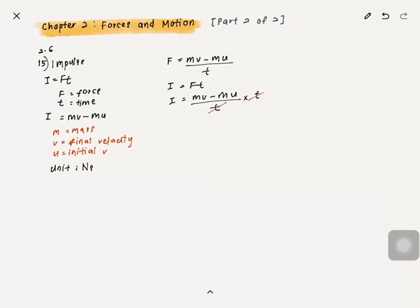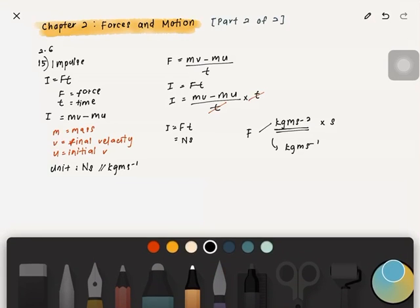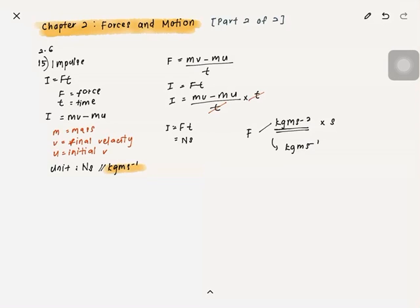The unit for impulse is Ns (newton-seconds), because I = F×t and force is in newtons and time in seconds. An alternative unit is kg·m·s⁻¹, since force can also be expressed as kg·m·s⁻², and multiplying by seconds gives kg·m·s⁻¹. So impulse can be expressed in either Ns or kg·m·s⁻¹.